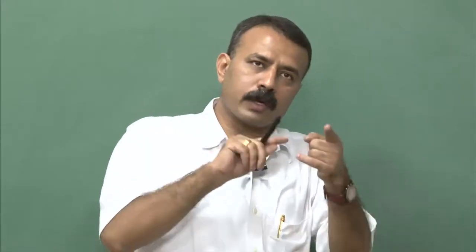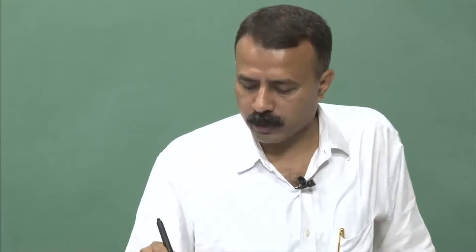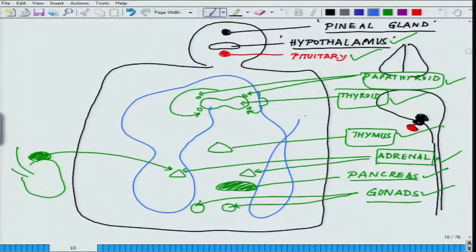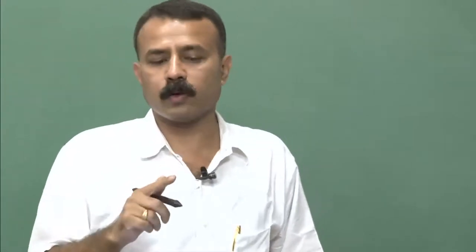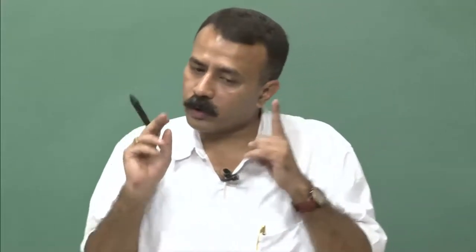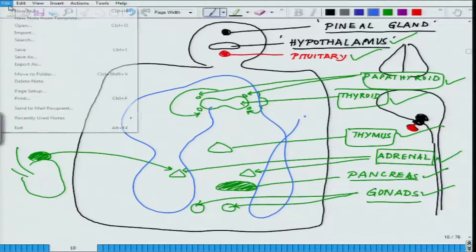Whatever secretion takes place, under the influence of different controls, hormones travel through blood vessels to different organs and wherever they have their receptors, they act accordingly. Something secreted in one place travels all over the body, but will only bind at the place where it has the receptor. It will reach everywhere but will not bind at any place until it finds its own receptor. This is a very fundamental understanding essential for this system.